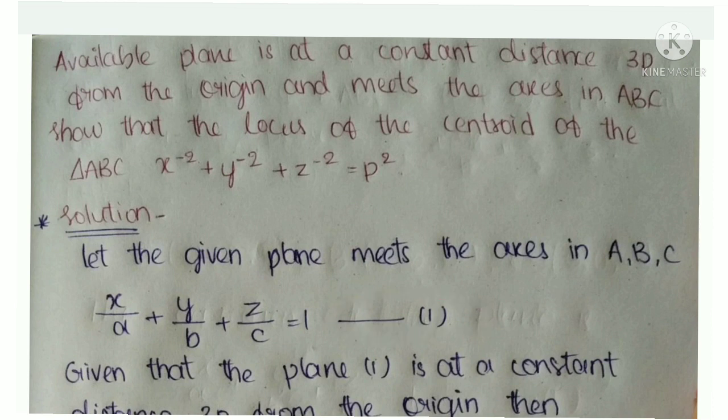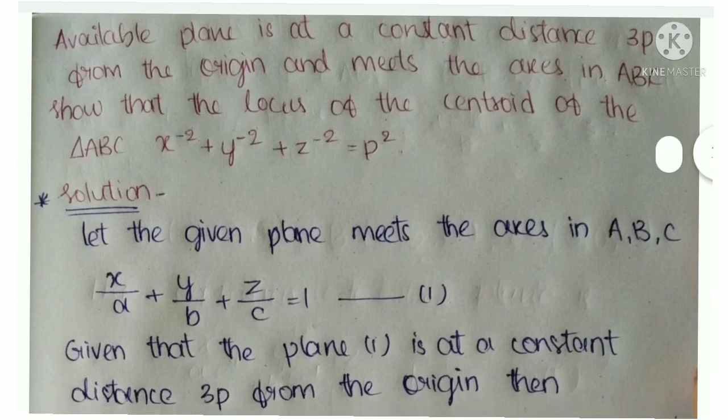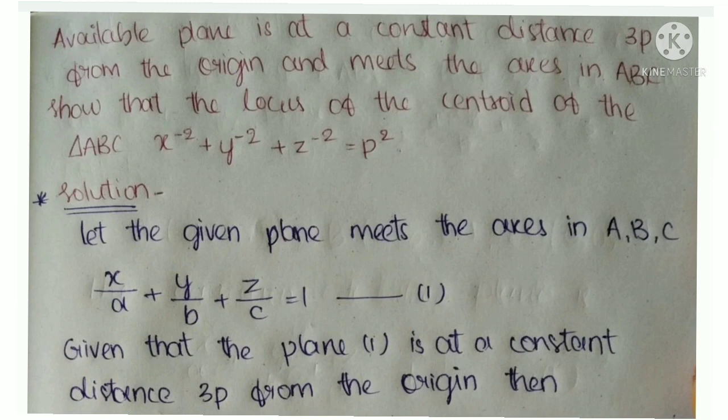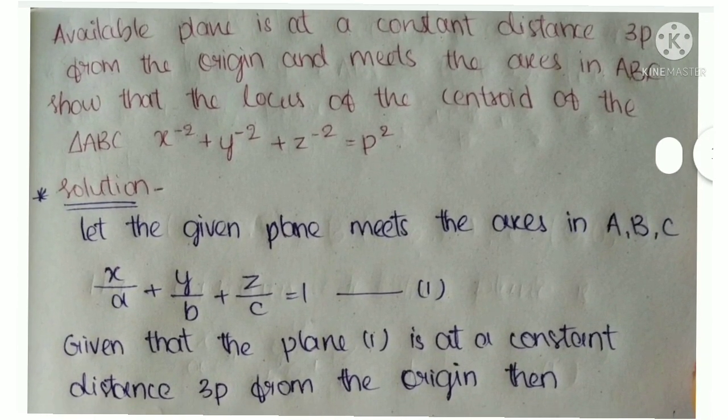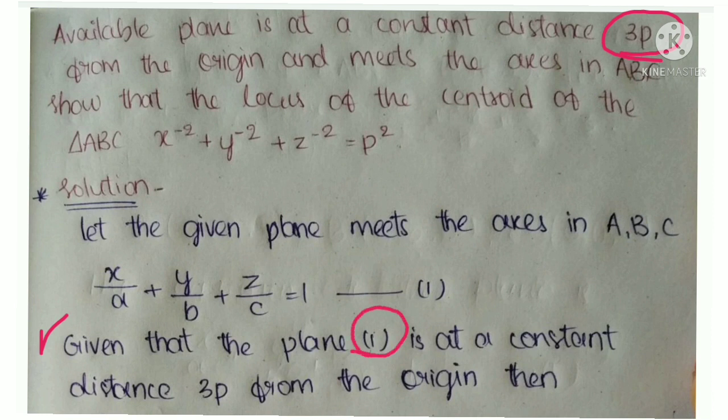Next step from the question: Given that the plane (1) is at constant distance 3p from the origin. We apply the distance formula. For origin coordinates (0,0,0), the distance formula gives us the relationship.